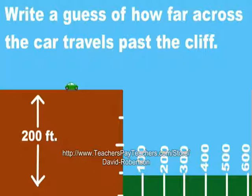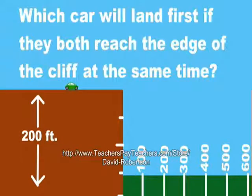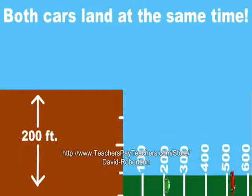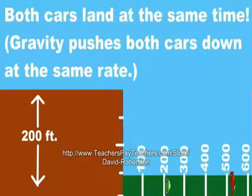And, as a special bonus question, which car will land first if they both reach the edge of the cliff at the exact same time? Both cars actually land at the exact same time, because gravity pushes both cars down at the same rate.